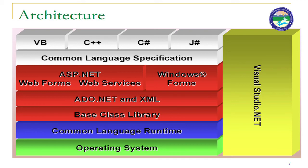We have a strong base class library in .NET architecture, meaning a large class library where every function is defined. This language is powerful because of its large and strong base class library. Programs written in any language — VB, C++, C#, or J# — can be executed by the Common Language Runtime, which is finally interfaced with the operating system.